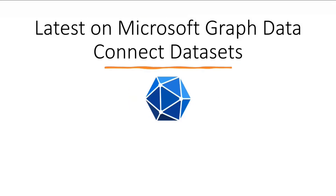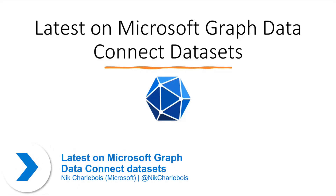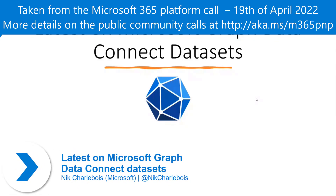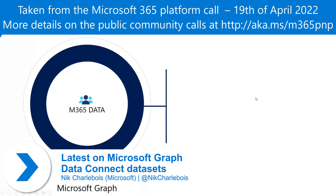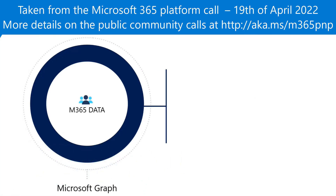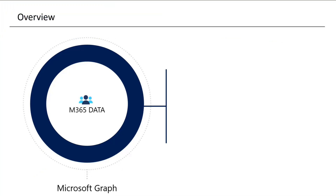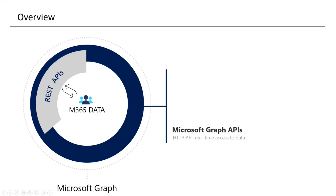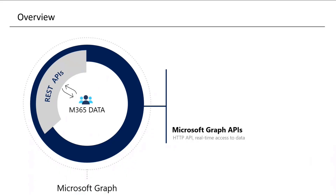Quick update on the datasets for Microsoft Graph Data Connect. Before diving into what's new, I want to do a quick overview of the different components of the Microsoft Graph ecosystem. The first component is the REST APIs — they've been around for many years and allow for CRUD-type transactional scenarios where you can create, read, update, and delete data inside Microsoft 365.